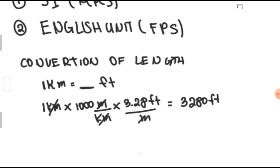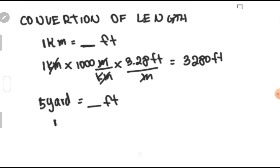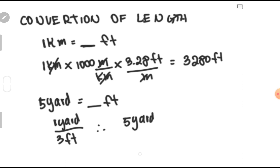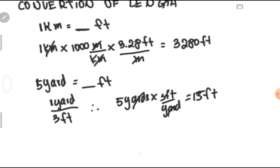Next, let us convert yards to feet. Let's say we have 5 yards — how many feet is that? Take note that 1 yard equals 3 feet. Therefore, 5 yards multiplied by 3 feet per yard equals 15 feet. So in every 5 yards, we have a length of 15 feet.